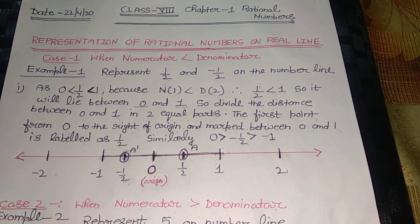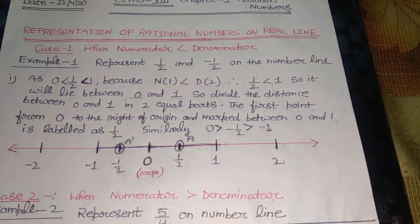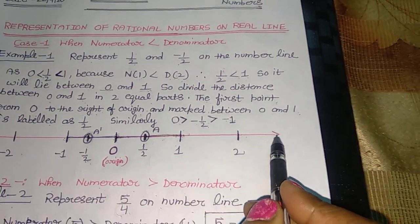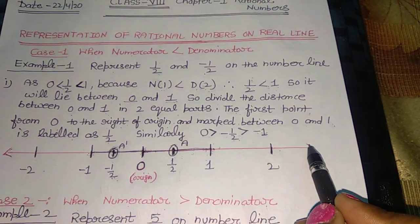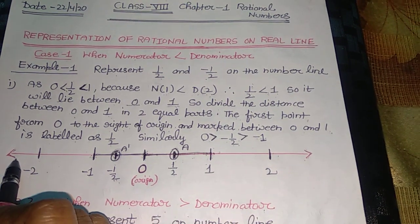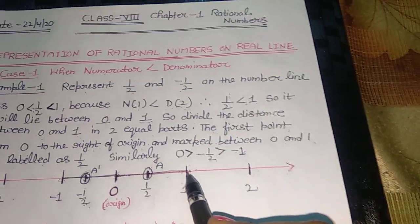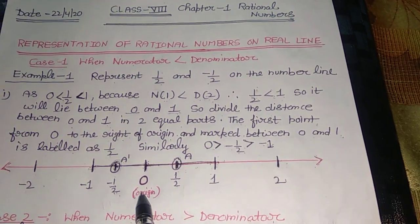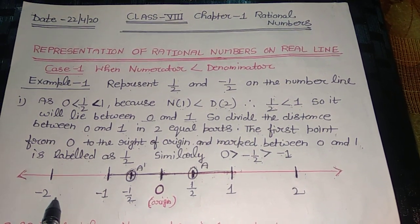As in class 7th, you have learned how to represent integers on a number line. For that, first we draw a line that can be extended on both sides endlessly — that's why I am putting two arrows on both ends. Then we take 0 at the center, which is called the origin. All positive numbers are on the right-hand side of 0, like 1, 2, and all negative numbers are on the left-hand side of 0, like minus 1, minus 2, and so on.